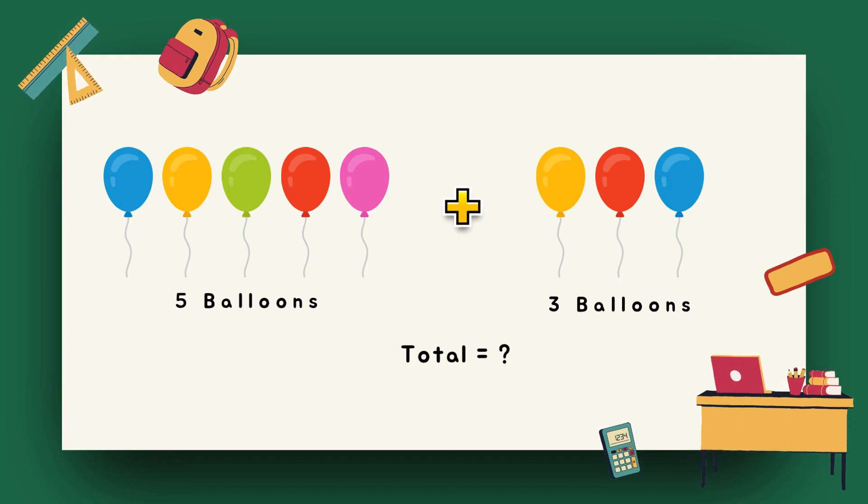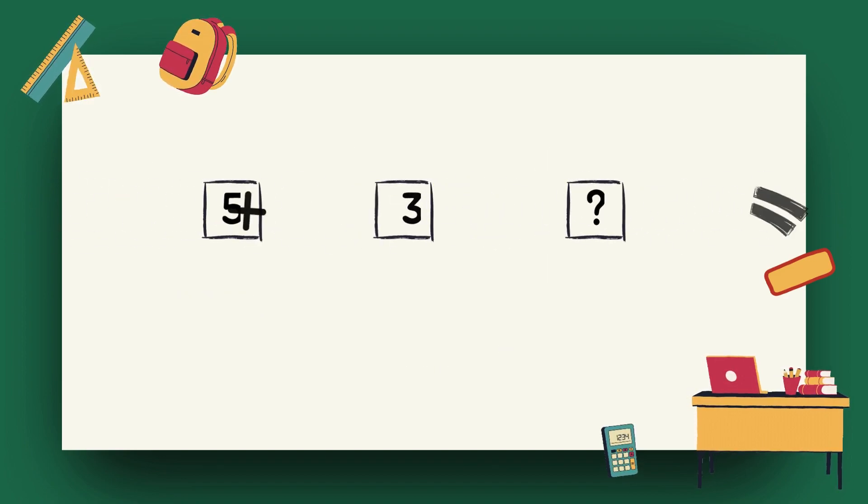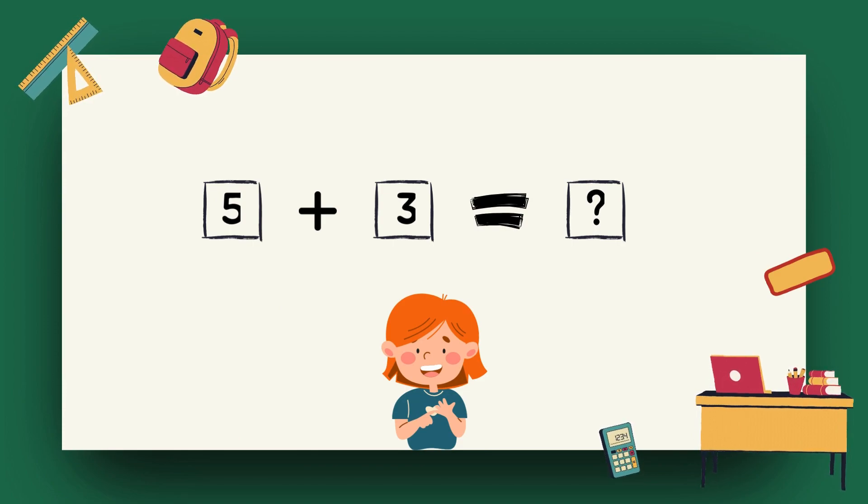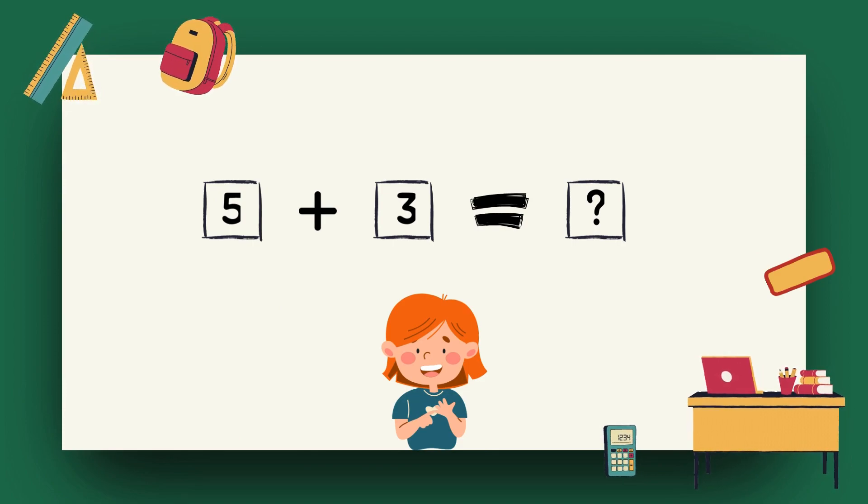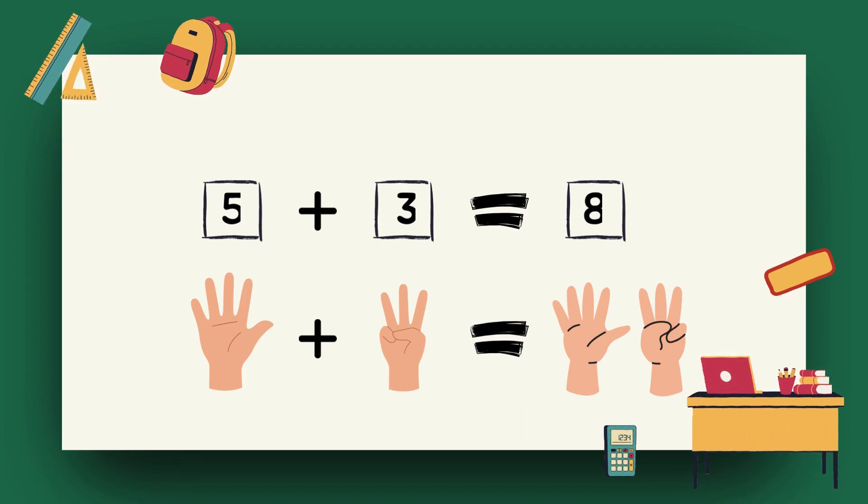To find out, you need to add five and three. You can write it like this: five plus three is equal to? To solve this, you can use your fingers. So, you have five balloons and three balloons, it becomes eight. You have eight balloons now.